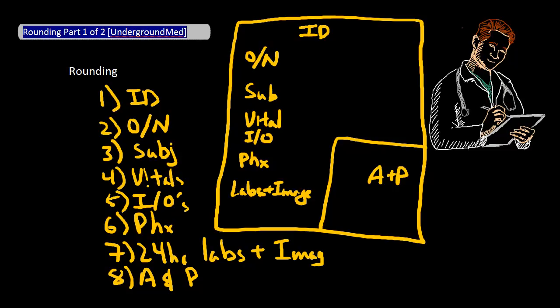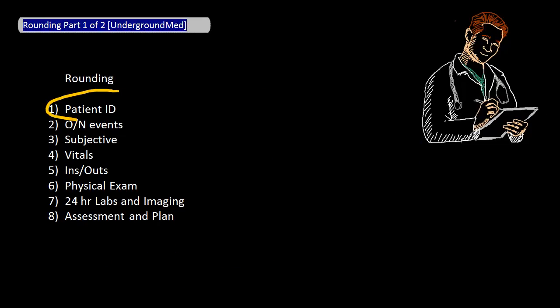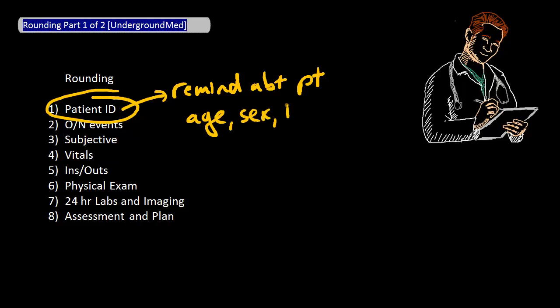Now that we've talked about what you need to present, let's talk about some tips for each part of your presentation. For the patient ID, the point of this is to remind your team about the patient as well as the active issues. The more familiar the team is with the patient, the less important this part is. The key pieces of information to include here include age, sex, and any relevant past medical history as well as the main issue being managed. For example, patient is a 67-year-old male with a past medical history of alcohol abuse who is being managed for day two of alcohol withdrawal on the Ativan assessment scale.